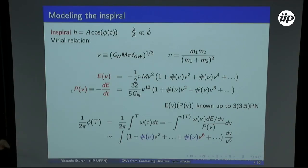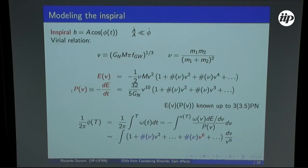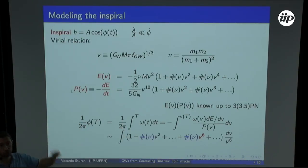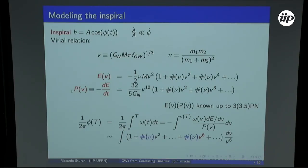What I want to convince you of is that if you only know the energy function of the system and the flux function, then you can compute the phase. In principle, to compute how the phase evolves in time, you solve the equation of motion - take one particle here and one there, let them interact via gravity. This is doable and is what is done to some extent in the EOB approach in LIGO when building templates. But there is a kind of shortcut that embodies all of the physics more transparently.